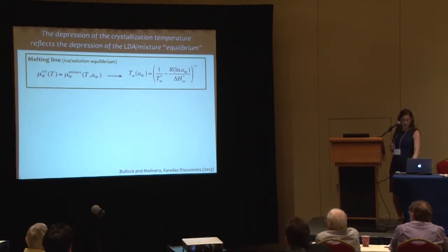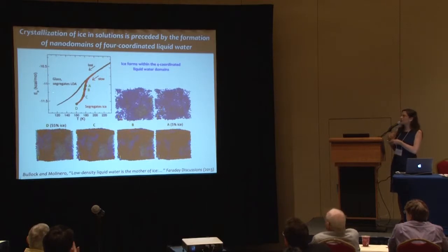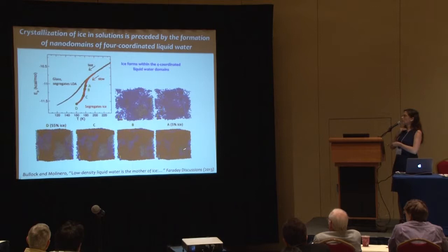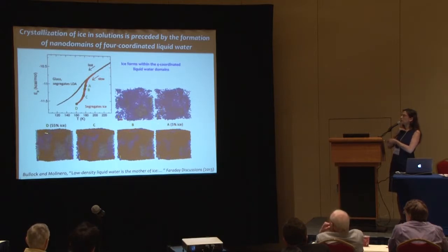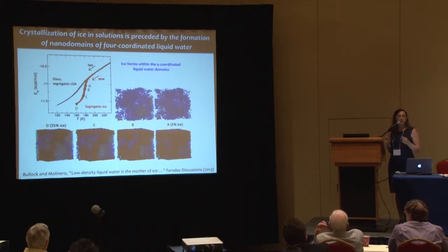More graphically: fast cooling gives a nanosegregated glass with 10% ions. Going slower, at each snapshot A, B, C, D, four-coordinated water emerges within the system, and ice — shown in cyan — always forms within the domains of four-coordinated water. The ice nuclei are born and grow within the low-density liquid domains. The low-density liquid is the mother of ice.